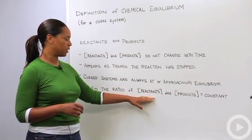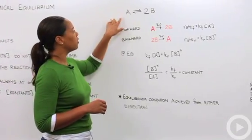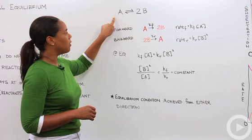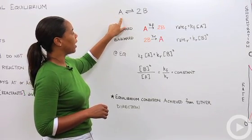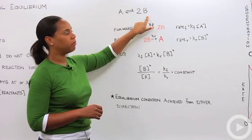So let's deal with this last tidbit a little bit more in detail. Let's assume we have a very simple reaction where A your reactants are in equilibrium with two moles of B where B are your products.